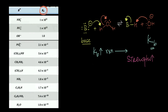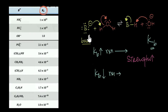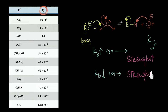On the other hand, if the KB value comes out to be very low, this means the reaction hasn't moved much in the forward direction, so the base is not that good at abstracting an H+ from water. The strength of the base is lower, making it a relatively weak base. So: greater the value of KB, stronger is the base.